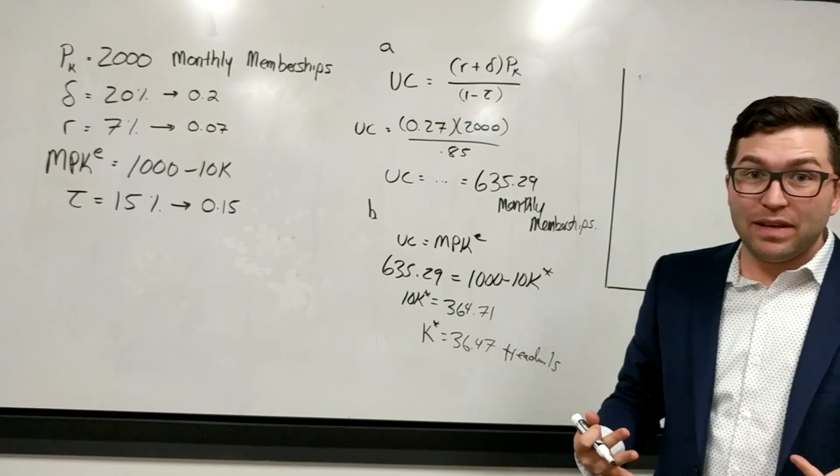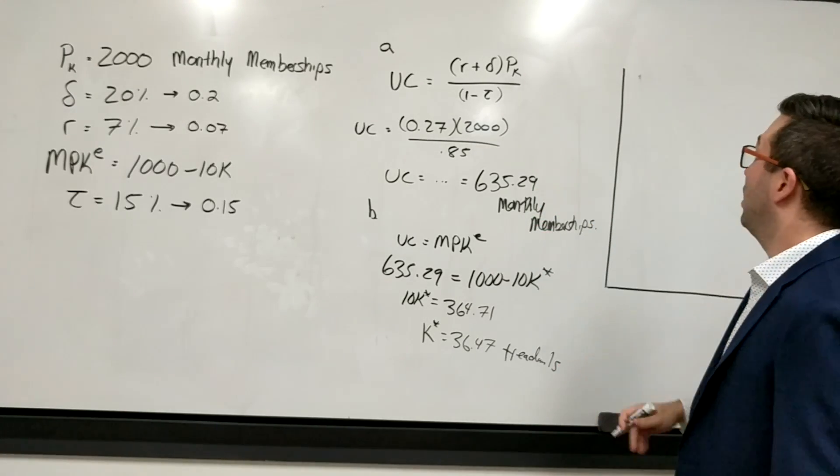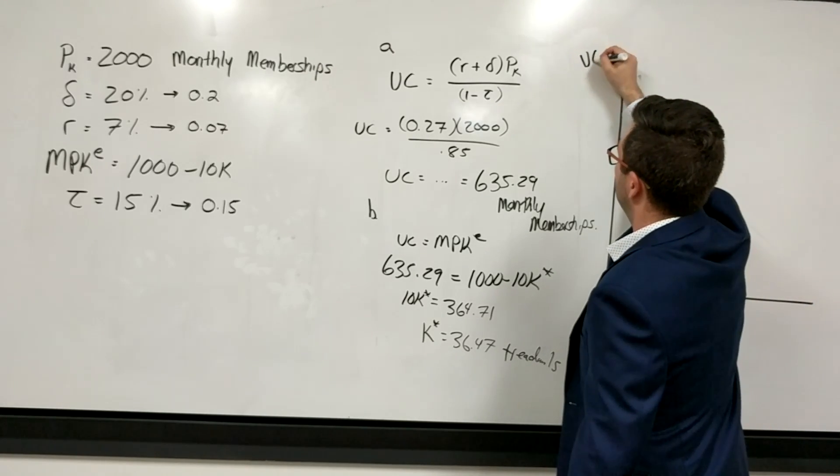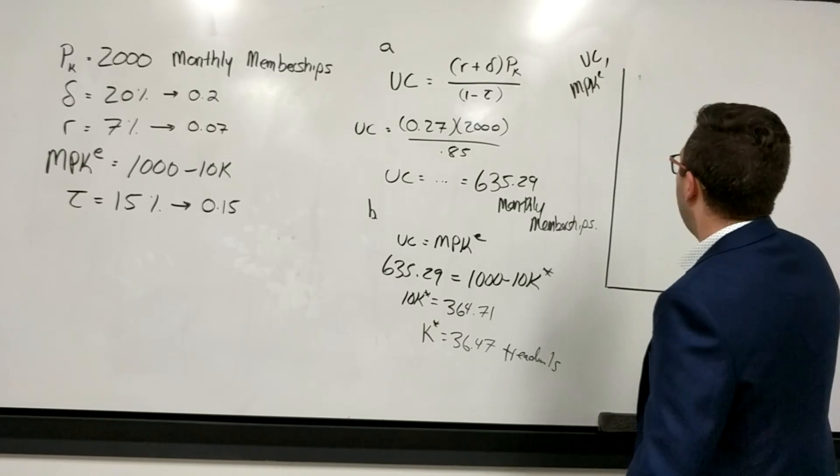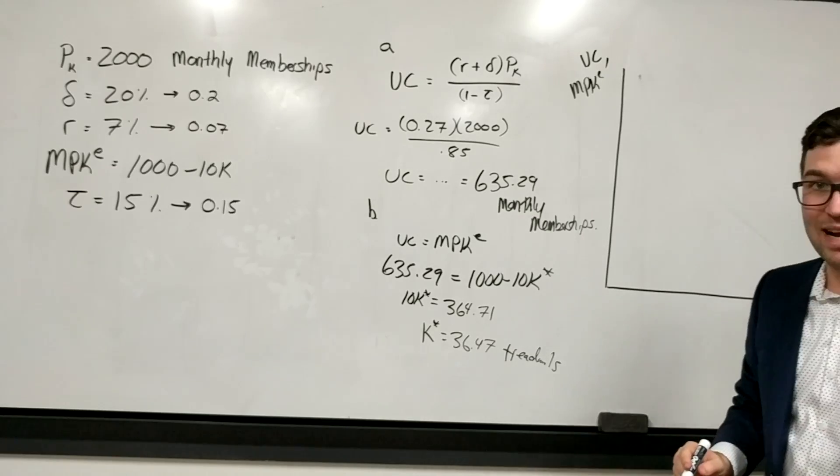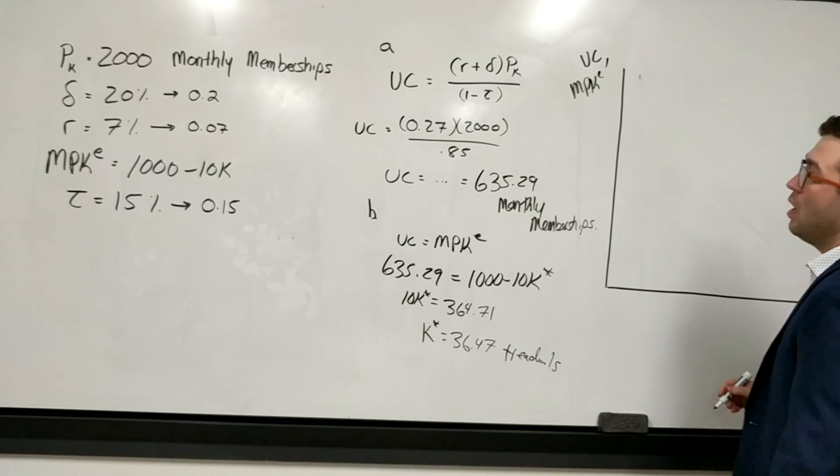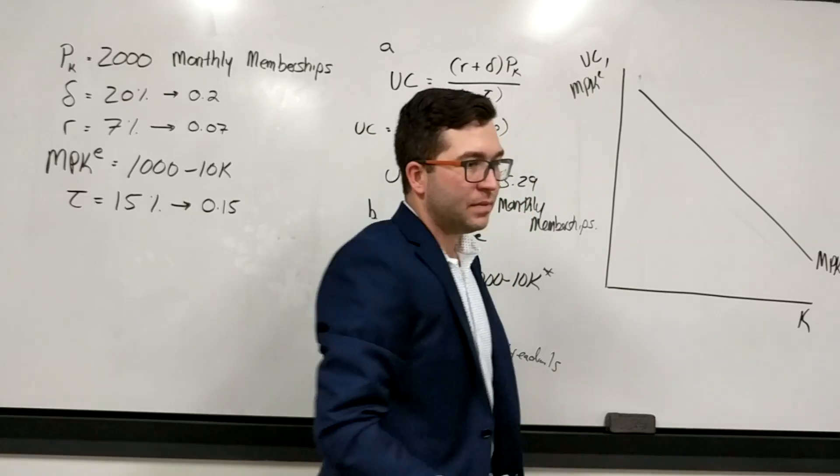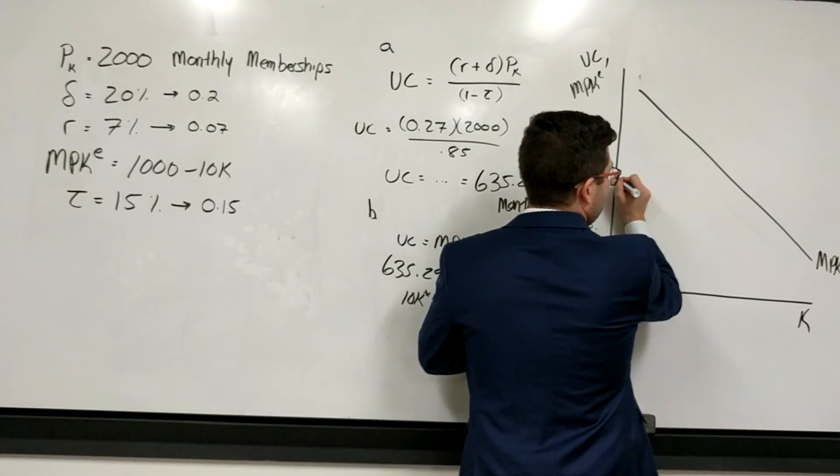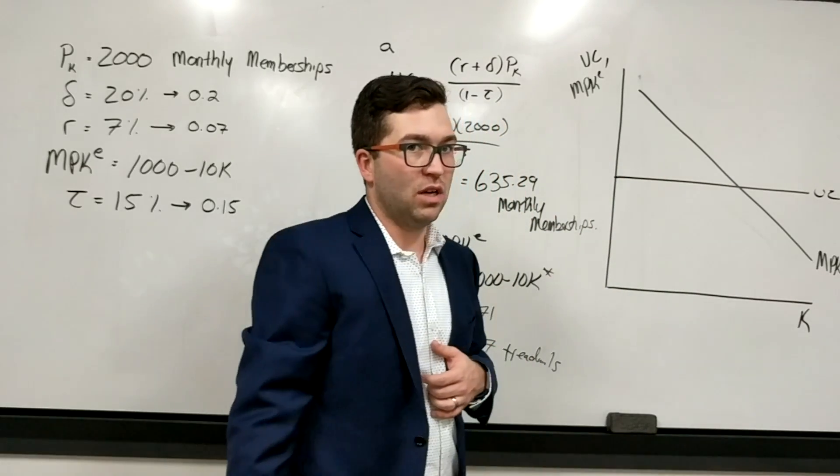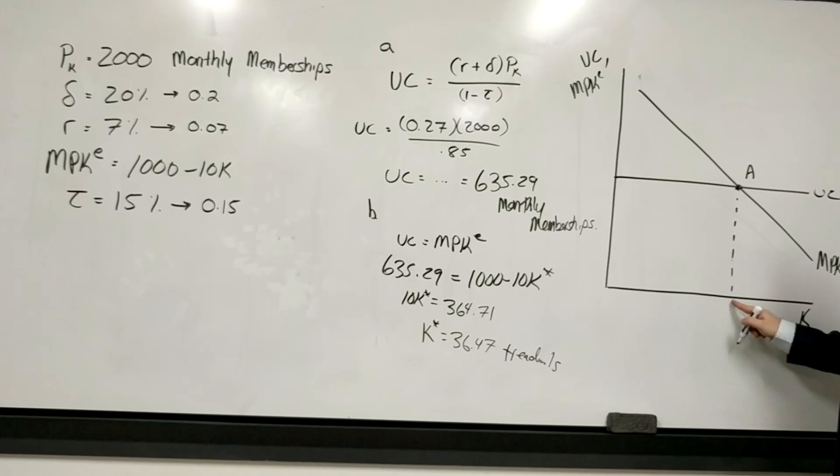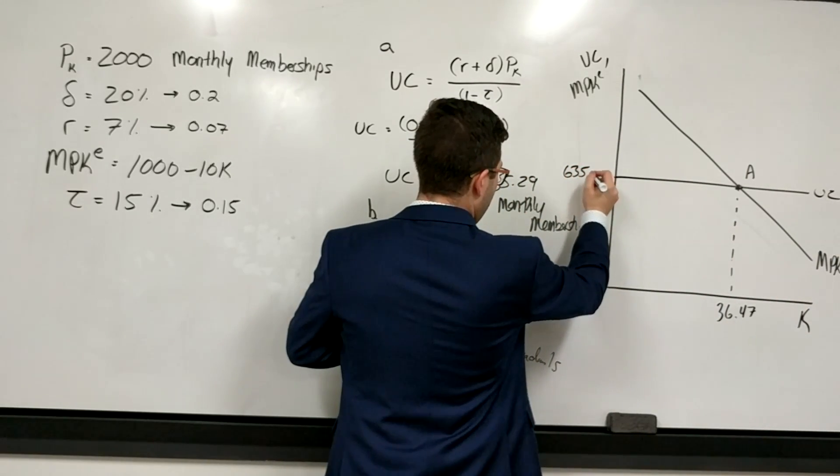Part C just asks us to graph this and label point A. Point A being what we found here. And so our user cost of capital and our MPK are going to go on the vertical axis. So this is going to measure the user cost of capital, but also my MPKE. And down here on the horizontal axis is going to be our level of capital, our desired level of capital for this company, for this firm. You can see that the MPKE is downward sloping. Let's label this MPKE, and then we're going to have the user cost of capital does not depend on capital, so my user cost is going to just be a horizontal line. Where they cross is what we just found out, so this is going to be point A, and this down here is going to be my 36.47, and over here is going to be my user cost of capital, 635.29.